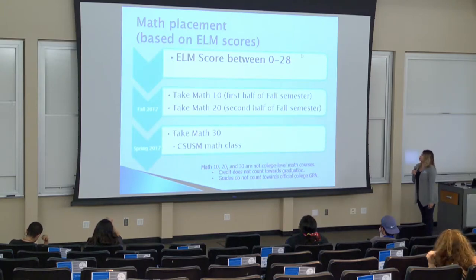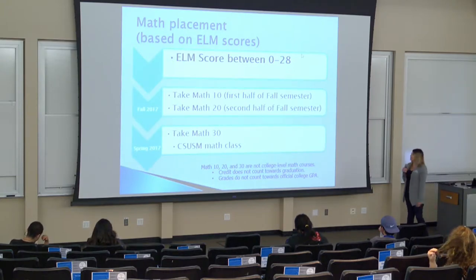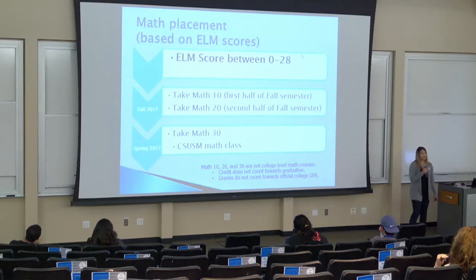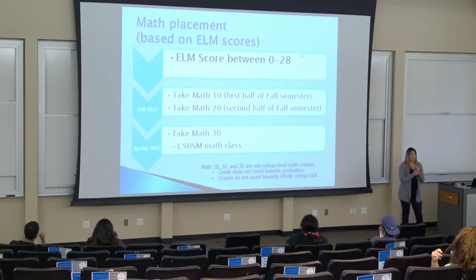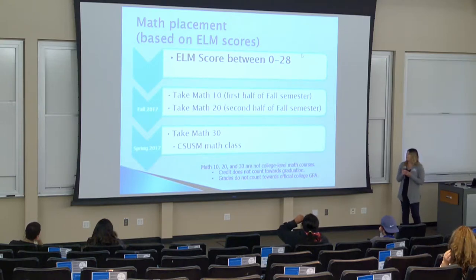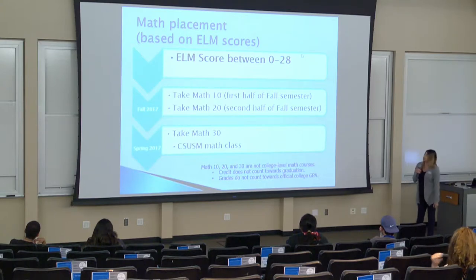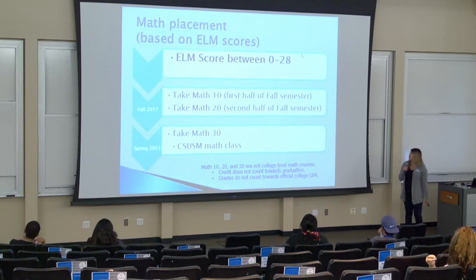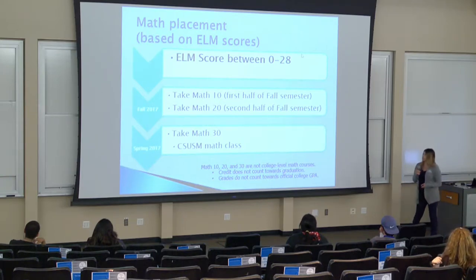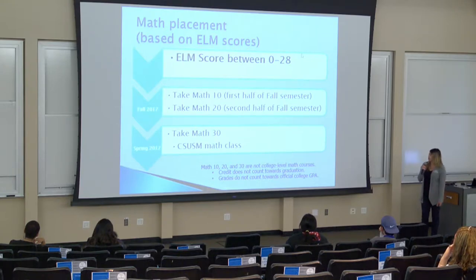For those who scored from 0 to 28, you're required to take three classes of remediation. Some of you have the opportunity to take Early Start, which will pass you out of one or two semesters of your math requirements. If you're taking the class with Early Start credit, you will be taking Math 10 and 20 in the fall semester, and then Math 30 in the spring semester.